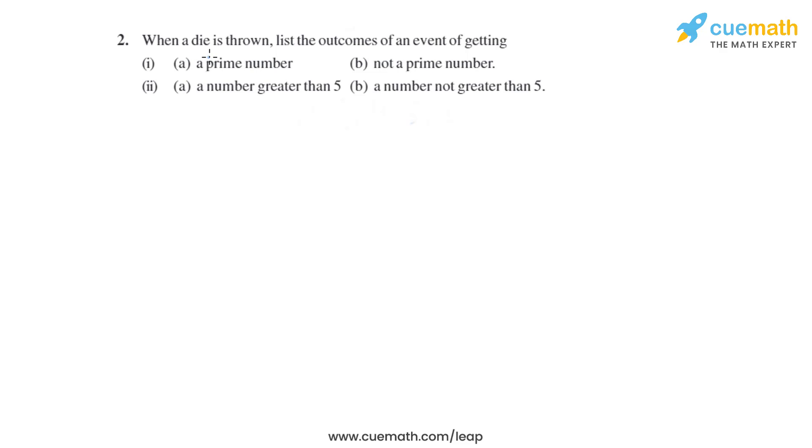Question 2 of this exercise says: when a die is thrown, list the outcomes of an event of getting (a) a prime number, (b) not a prime number, (c) a number greater than 5, (d) a number not greater than 5.